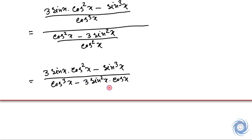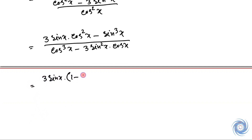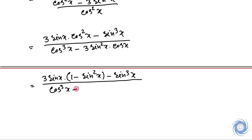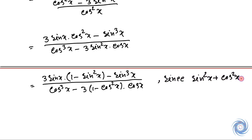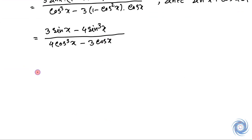Now we will use the formula that sin squared x plus cos squared x equals 1, and from here we have the simplified expression, and this implies the next step, and this implies the following result.